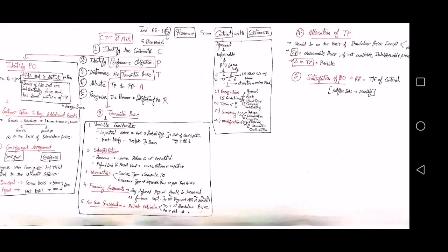The five-step model headings are: identify the contracts, identify the performance obligation, determine the transaction price, allocate the transaction price to the performance obligation, and recognize the revenue which is satisfaction of the performance obligation. A memory technique for it is CPT AIR: C for contract, P for performance obligation, T for transaction price, A for allocate, and R for revenue recognition.